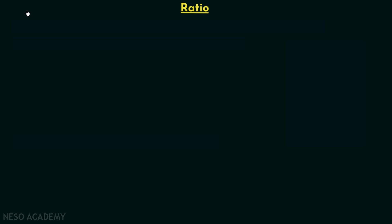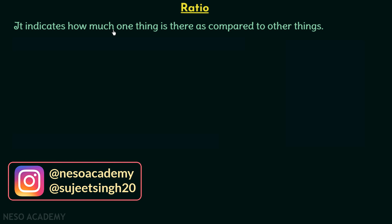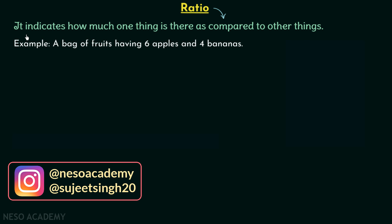In the previous lecture we had a discussion on reasoning and aptitude, and now we are going to understand what is a ratio. A ratio indicates how much one thing is there as compared to other things. So a ratio is a comparison of one thing with other things. The definition is very simple to understand, and now we will move on to the example.